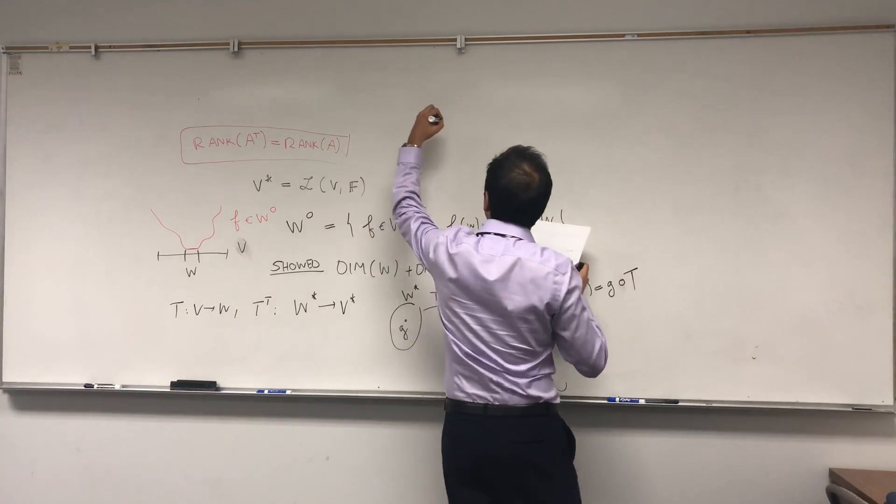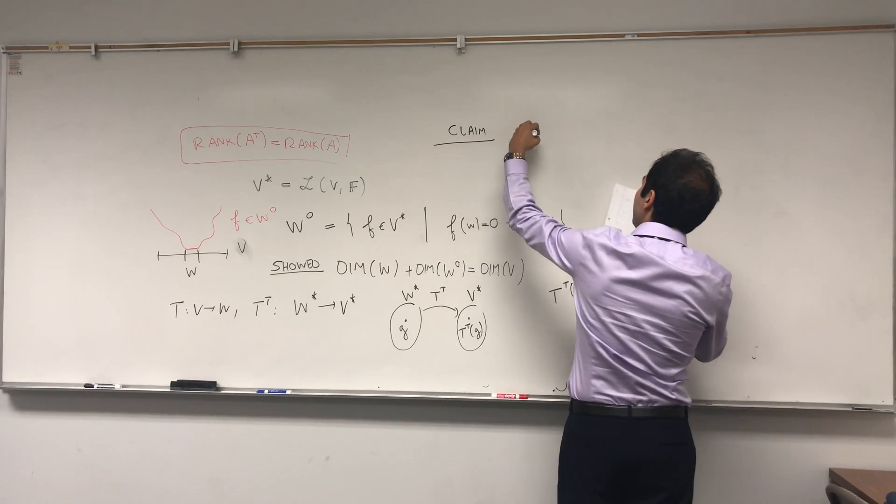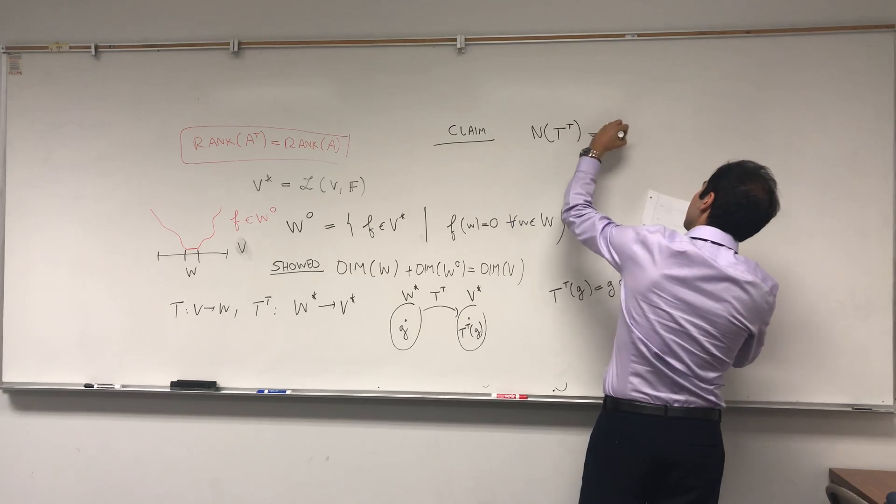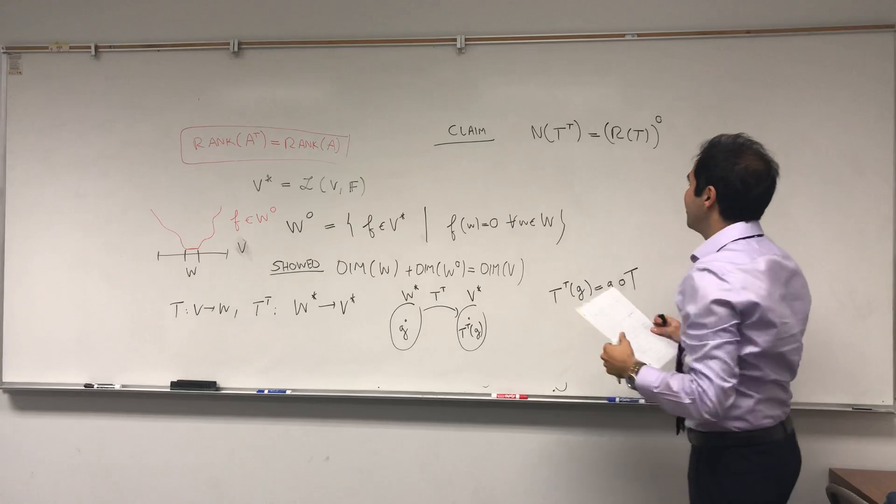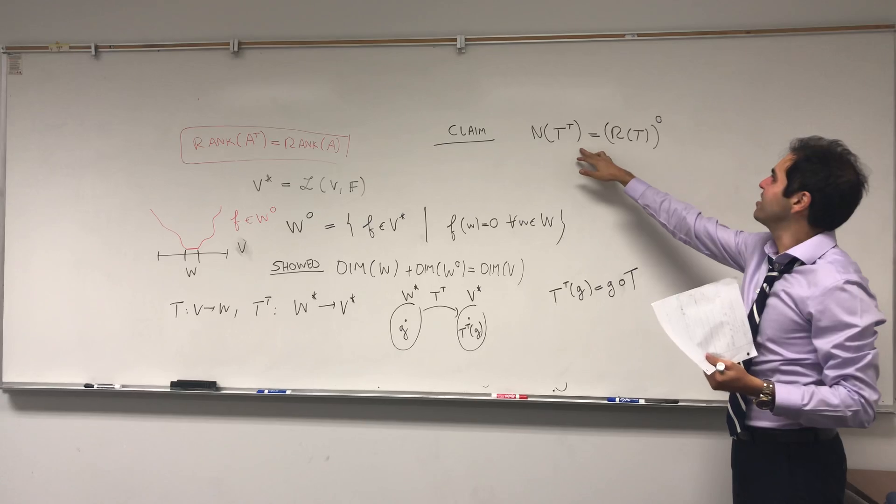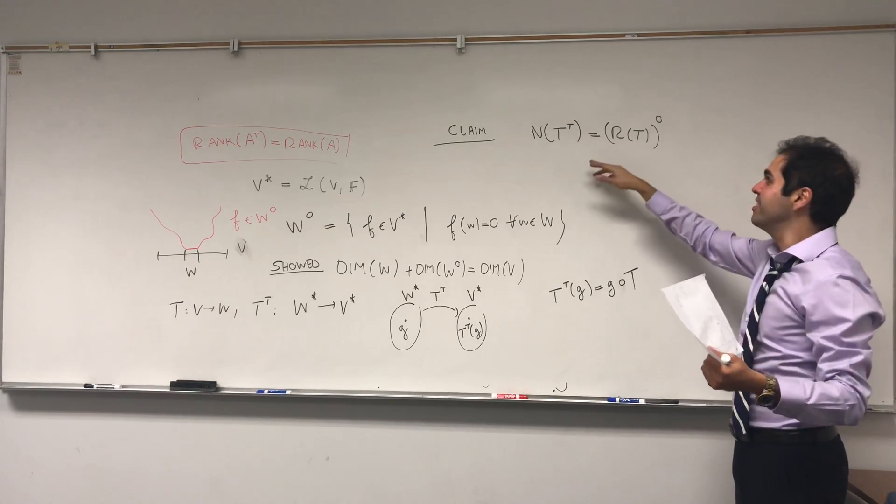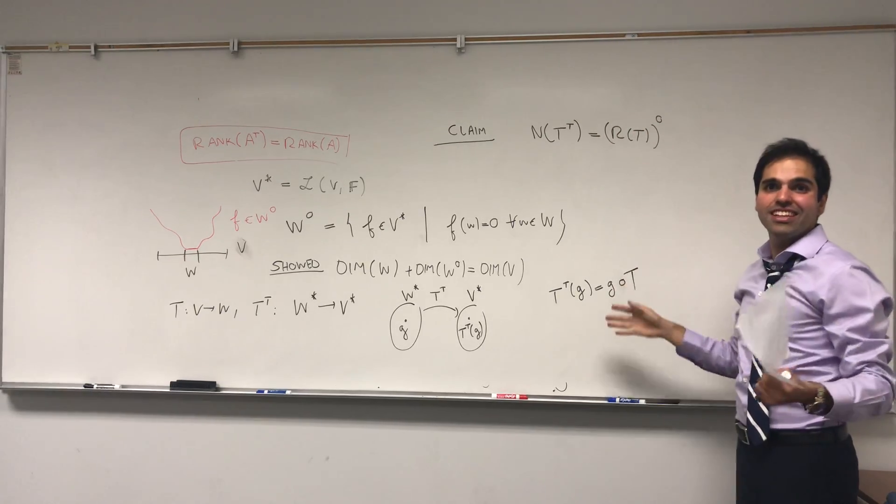But what I want to show you is somehow the T transpose and the annihilator are related. So this is the main claim for today. I want to show that the null space of T transpose equals to the range of T annihilator. So interestingly, the null space of the transpose is related to the range with this transpose and the annihilator, which is really cool.